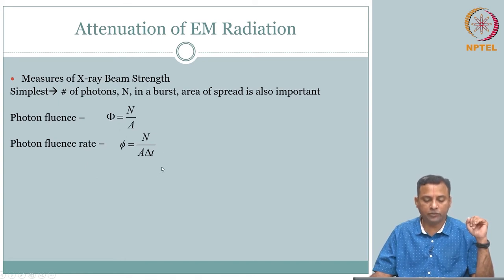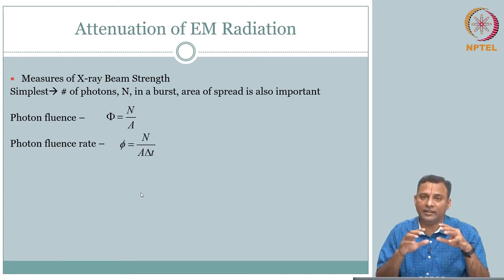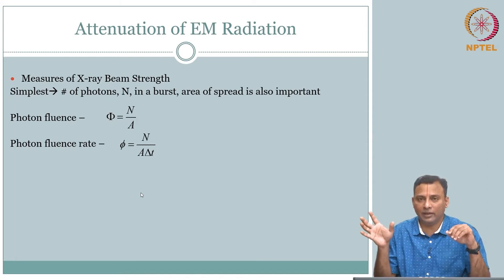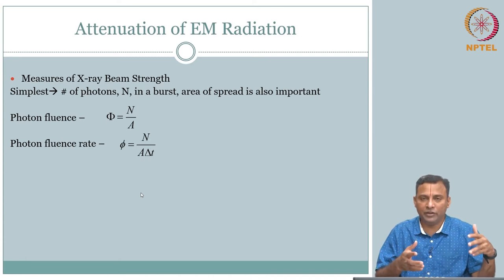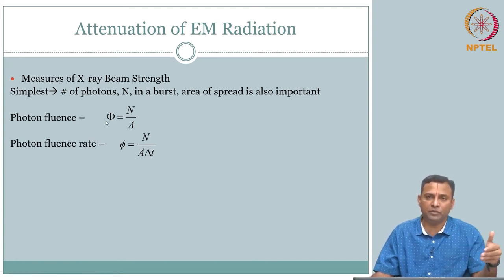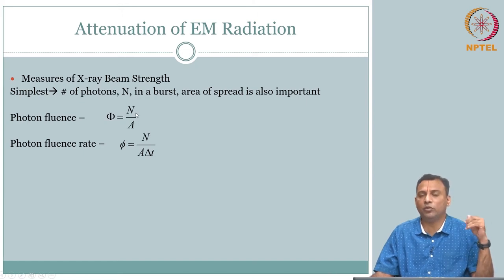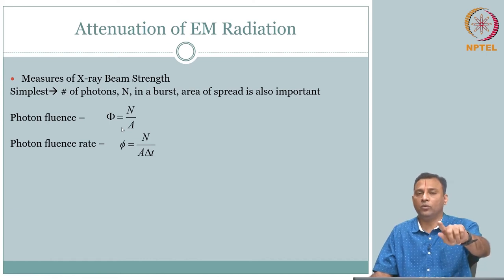Fluence and fluence rate are fine, but one may argue: we talked about X-rays in terms of energies. In X-ray based modalities like radiography or X-ray CT, we are more interested in the energy part rather than just counting photons. So would energy be a better measure of describing X-ray beam strength? Yes, you can do that. You are not really interested in number of photons per se; you are interested in the energy that is flowing through. For simplicity, we will say if there is only one energy coming out — the n photons are all coming out with the same energy — what is that energy? E equals h-mu.